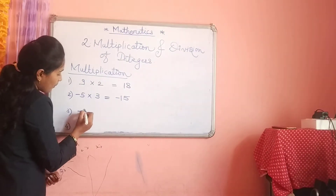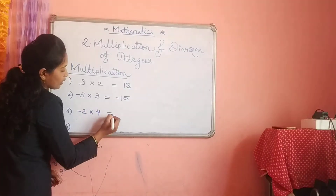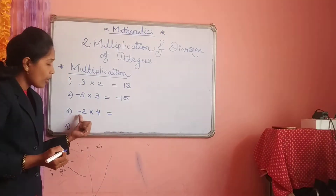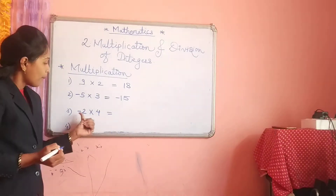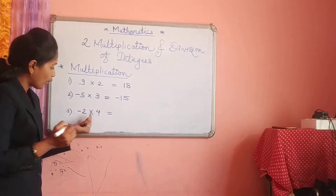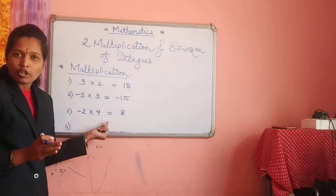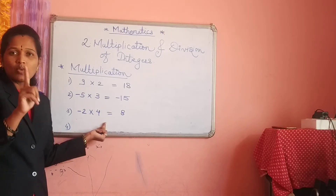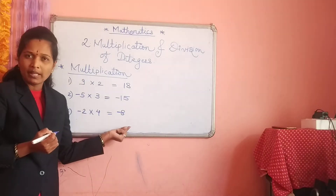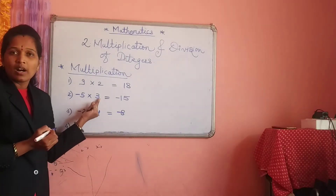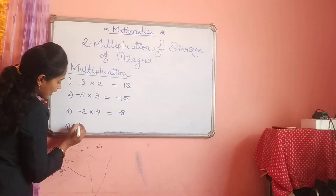Next number: minus 2 multiplied by 4. One number is negative and another is positive. Do the multiplication: 4 twos are 8. Don't think about which number is bigger or smaller. You have one number negative — directly give the negative sign to the answer. It is very easy in multiplication: if one number is negative, directly give the negative sign. So the answer is minus 8.